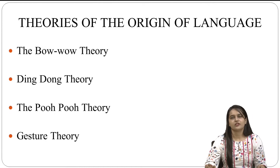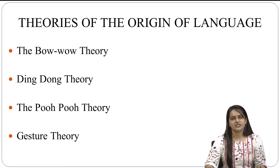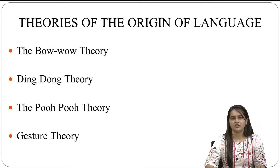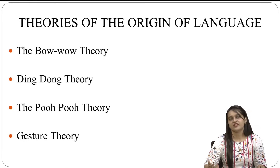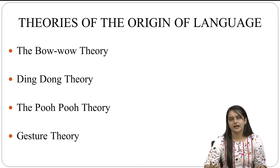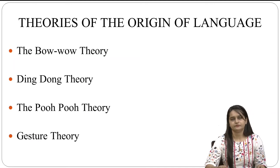The first theory of the origin of language is the Bow Wow theory. This theory supposes that human speech originated in man's attempt to imitate the sound of nature. Thus, a dog might be called a Bow Wow or a cow Moo. There is no denying the fact that such imitation accounts for a certain number of words in the English vocabulary — that is, cuckoo, hiss, gargle, whistle, whine, babble, prattle, etc. These words are examples of this theory. Words that have this origin are sometimes said to be onomatopoeic.